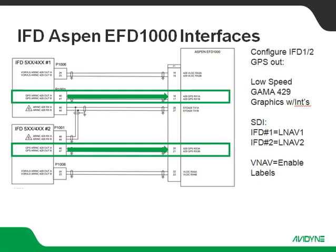The SDI setting on the number 1 IFD, we're going to set for LNAV1. On the number 2 IFD, we're going to set that for LNAV2. What that does is it allows the Aspen to understand which GPS is selected at any given time as a navigation source. On the Aspen, when you select GPS1 or GPS2, this SDI setting is how the system knows who's driving the boat at the time.